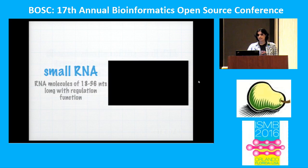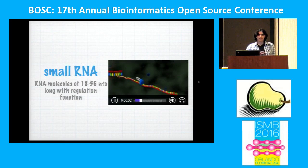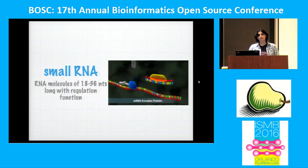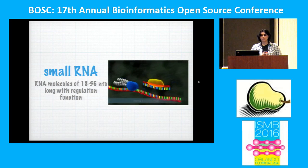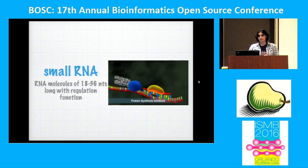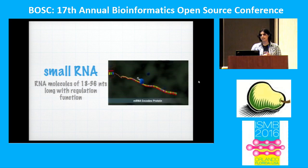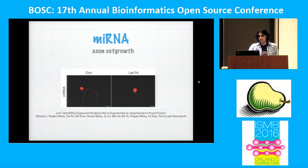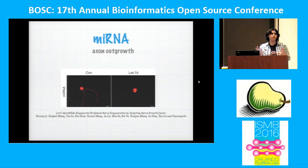So what is a small RNA? It's a very tiny molecule, 18 to 34 nucleotides long. The most well-known types have a very important function in gene regulation — they do that by binding to the transcript and stopping translation, so protein levels decrease. MicroRNA is the most well-known type of small RNA.